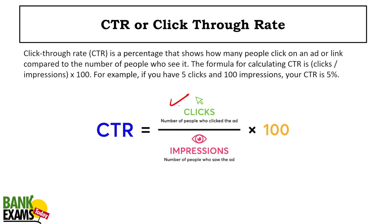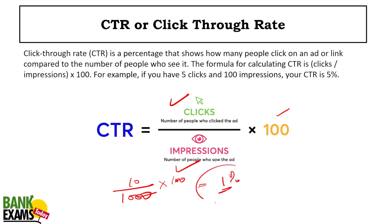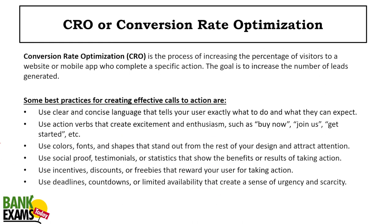Click-Through Rate, or CTR: the formula is number of clicks divided by total number of impressions, multiplied by 100. For example, if 1,000 people saw your ad and only 10 clicked it, your CTR is 1 percent. CTR is the number of people who clicked the advertisement divided by the number of people who actually saw it.